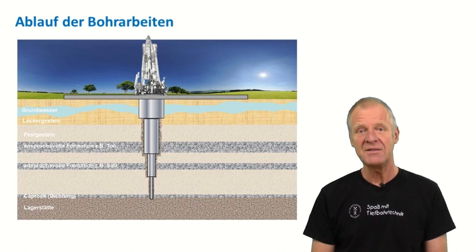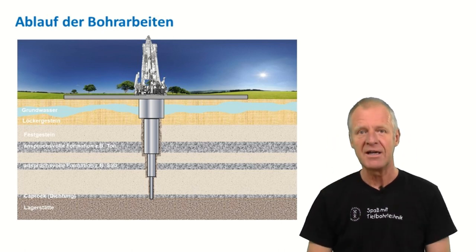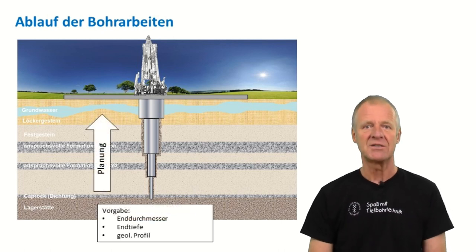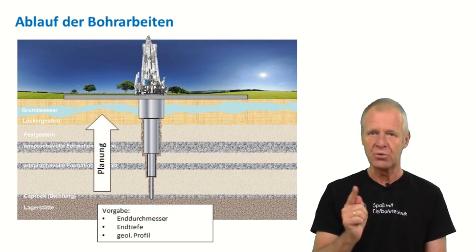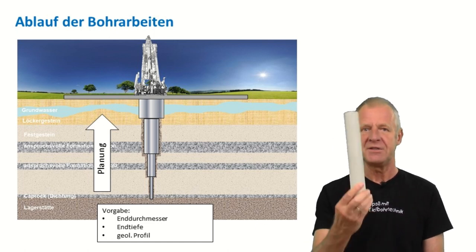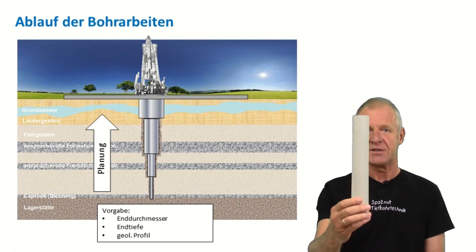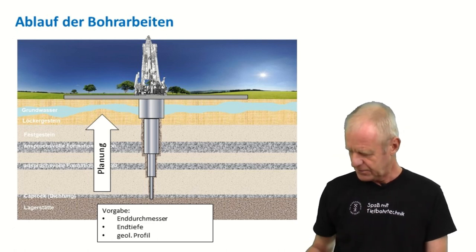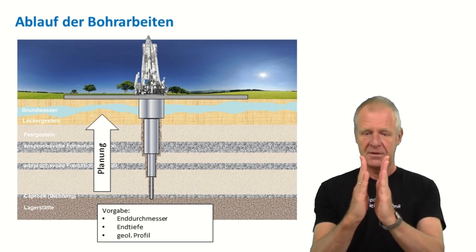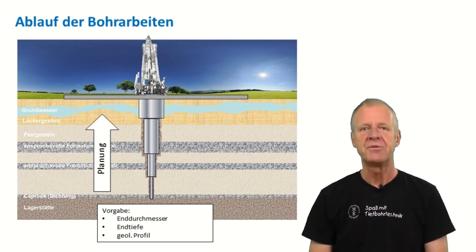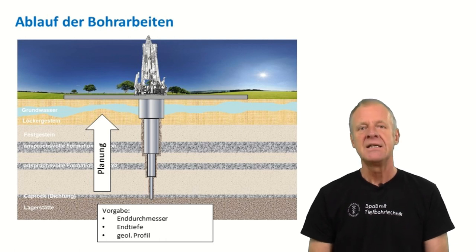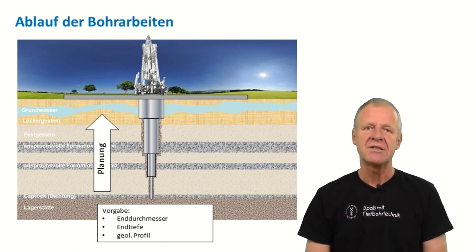One could of course think what a mess — the borehole has become so small. But in fact, deep boreholes are planned exactly the other way around: from the bottom upwards. For planning a well, we need three specifications: the target depth of the well, the diameter of the last casing string, and a geological profile. The geological profile helps us to identify where casings will have to be set and how many casings we need on our way from the reservoir to the surface.